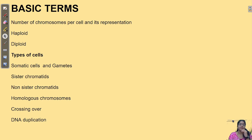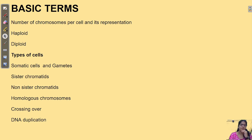Haploid means one set. Haploid number of chromosomes are seen in gametes. Gametes are haploid in number — they contain only one set of chromosomes. They have 23 chromosomes, with only one set. In organisms which are haploid, they have only 23 chromosomes in the cell, with no extra copy. Please remember, these are the basic terms.